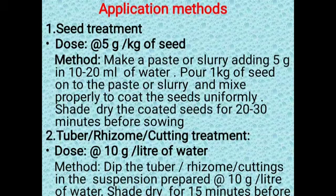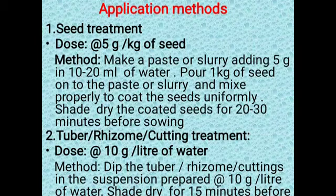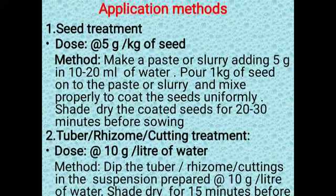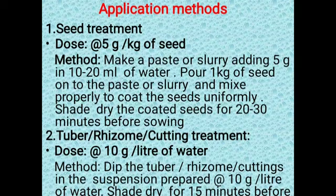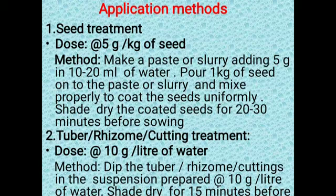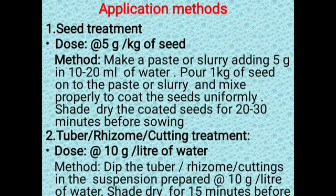For tuber, rhizome, or cutting treatment, the required dose is 10 grams of biocontrol agent per liter of water. Take 1 liter of water, add 10 grams of Bacillus or Trichoderma viride, make a solution, and dip the tubers, rhizomes, or cuttings — for example, rhizomes of turmeric — for 15 minutes. Then dry in shade for 10 to 20 minutes before using for sowing.